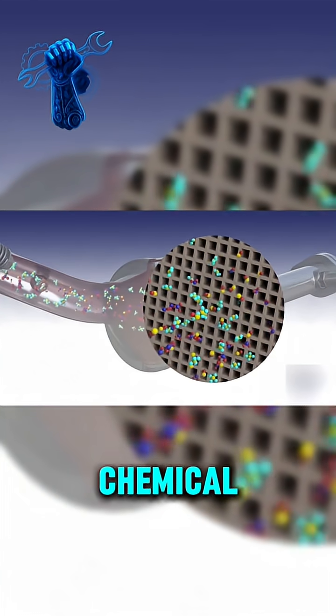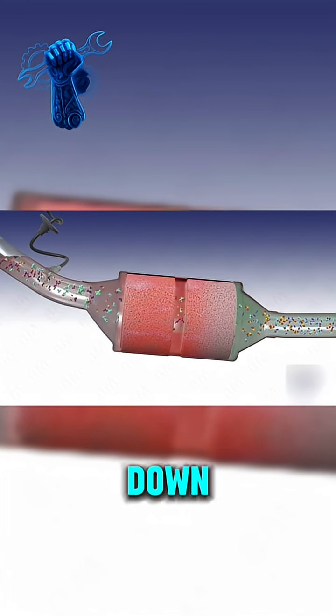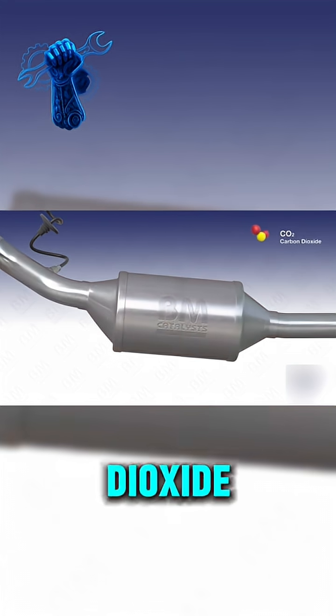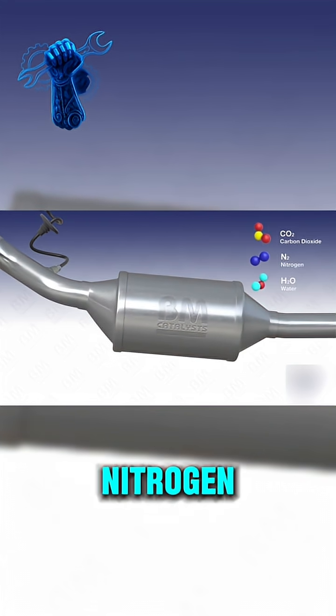Instantly, chemical reactions begin. Poisonous gases are broken down and transformed into carbon dioxide, water vapor, and nitrogen.